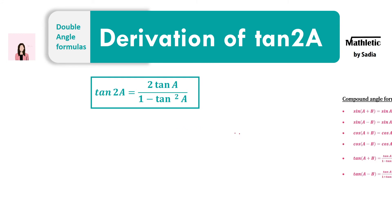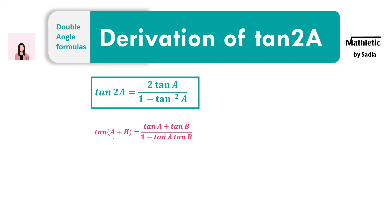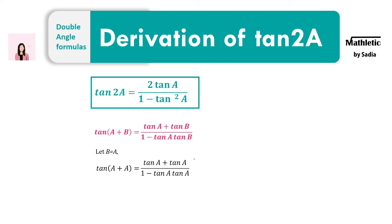Next is tan 2a. For that we need to use the compound angle formula for tan(a + b). To get 2a, we replace b by a, so a plus a gives us 2a on the left side. Similarly, we replace all the b in this equation by a. At the numerator, tan a plus tan a gives us 2 tan a. At the denominator, we have tan a times tan a, which gives us tan squared a. So that's the formula for tan 2a.